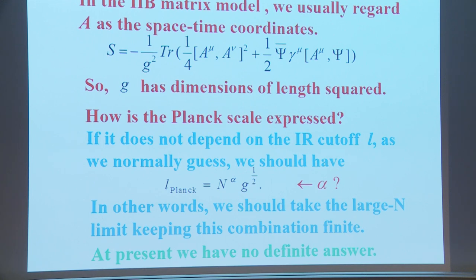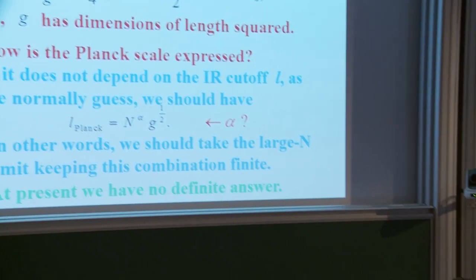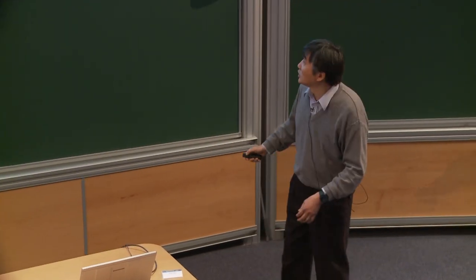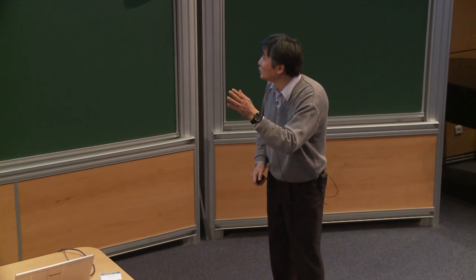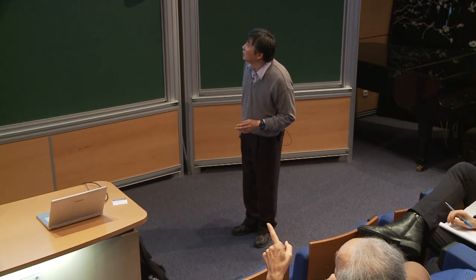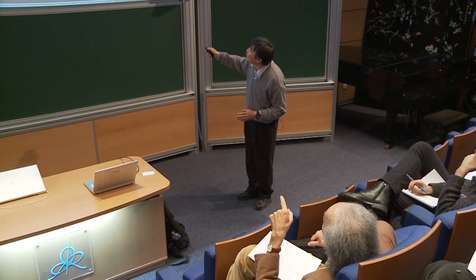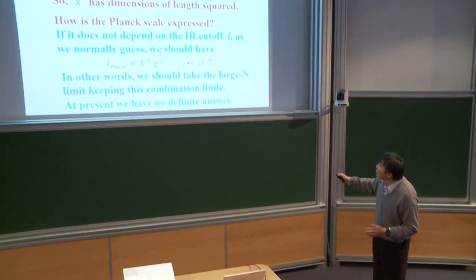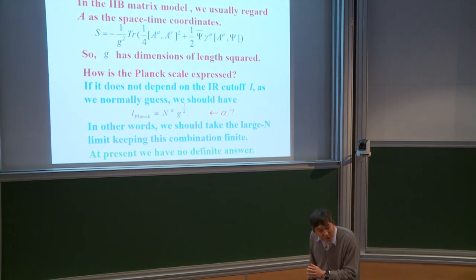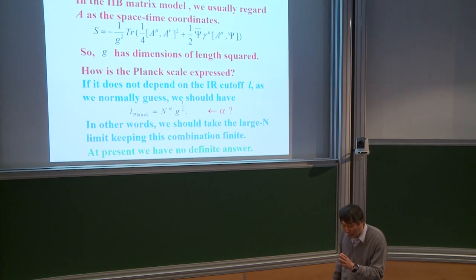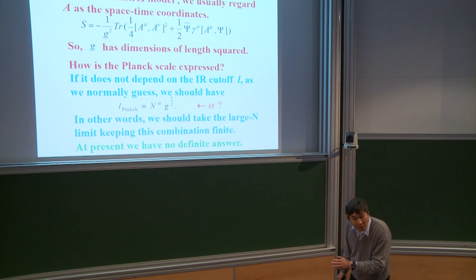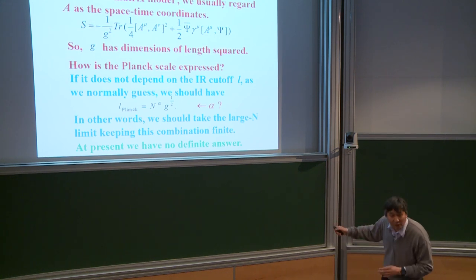In 10 dimensions there is both a string length and a Planck length, related by string coupling. G is the coupling of this matrix model, not the string coupling. People believe G_string should be fixed by some mechanism, and after G_string is fixed, the Planck scale is proportional to the string scale.